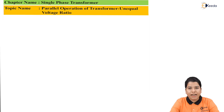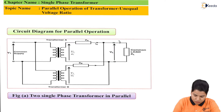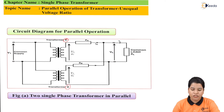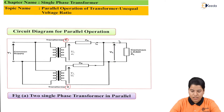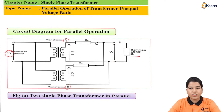The circuit diagram for the parallel operation of transformer is as shown in the figure. In this figure the two transformers A and B are connected in parallel. The primary winding of both transformers is connected to common voltage V1, whereas the secondary winding is connected to the common load ZL. Let us consider that the voltage ratio of the transformer is unequal, so the secondary voltages of the transformers are not the same.